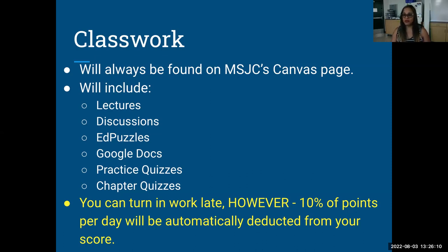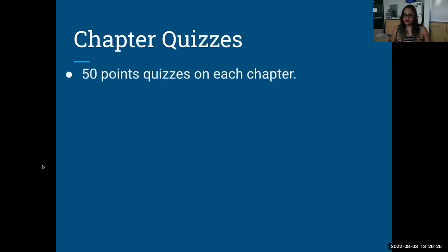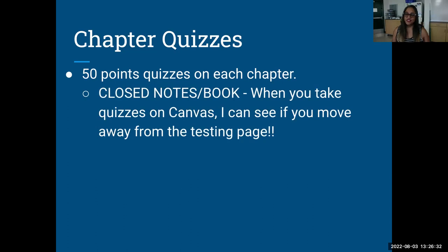You can turn in work late — I do accept late work. However, points are taken off: it's 10% of points per day. So if the assignment is worth 100 points, 10 points per day get taken off depending on when you do it. Chapter quizzes are worth 50 points each, one chapter per quiz. They should be taken closed notes and closed book. I'm obviously not with you, so we're on the honor system. But when you take quizzes on Canvas, I can see if you move away from the testing page — I can see if you're on Canvas the whole time or if you switch to another tab or window. Canvas gives me that ability.